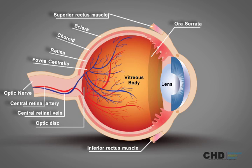The ora serrata is the junction between the retina and the ciliary body. It is the area where the retina transitions from a non-photosensitive area to a multilayered photosensitive region. The ciliary body is the structure in the eye that produces a transparent liquid within the eye.